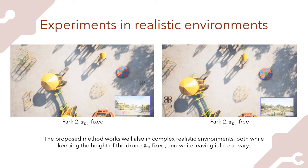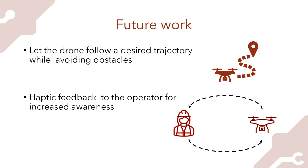Future work will focus mainly on two topics. First, we will let the drone follow a desired trajectory so that after avoiding an obstacle the robot goes back to the desired path. Second, we will investigate whether adding some feedback on the operator side — for example haptic feedback — can help the collaboration between the two agents. In particular, we will create a bilateral communication between the human and the robot.